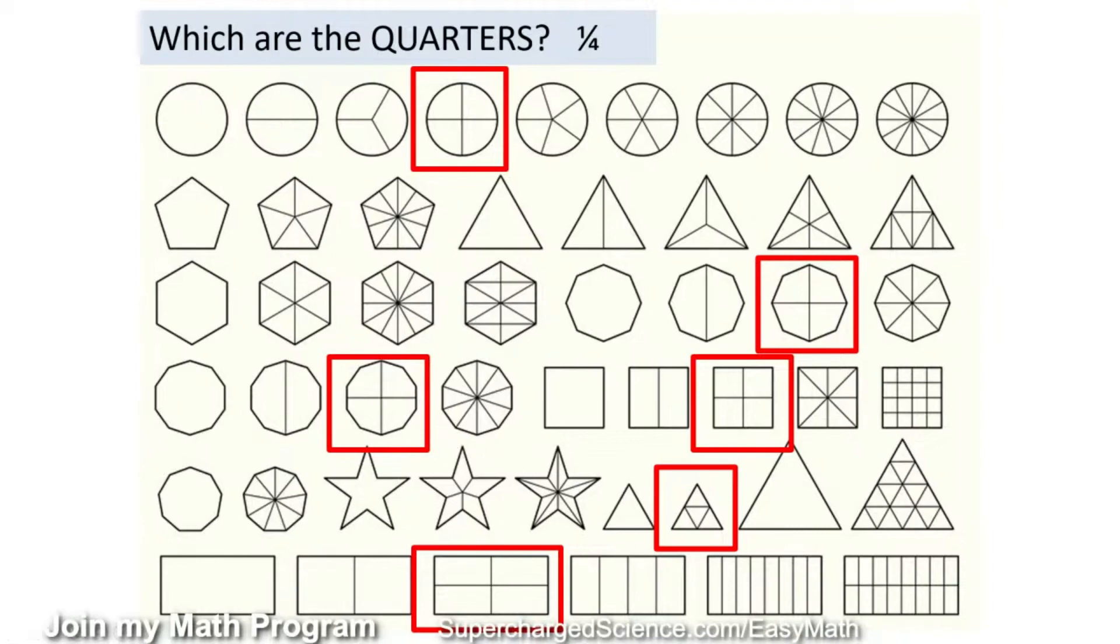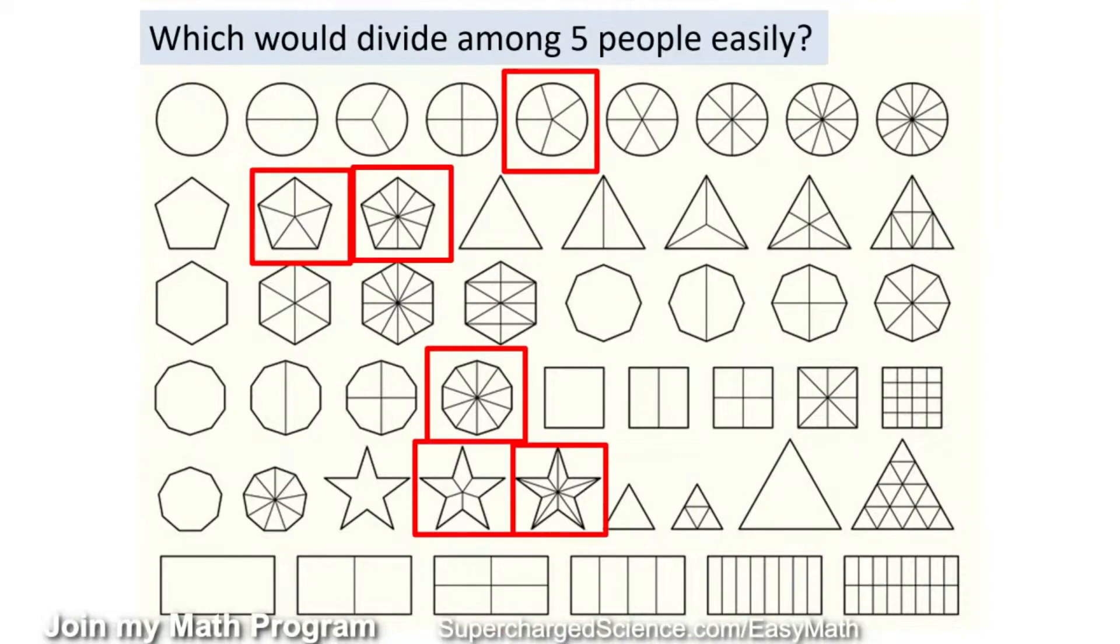So we have quarters. Yep. So if we had more than four, if we had five people, how would we divide among five people easily? Well, we could do this one. We could do this one. But notice I didn't say find the fifths. I said, how would you divide this among five people easily? How come I have both of these done? Take a look. This is divided into five. This is divided into 10.